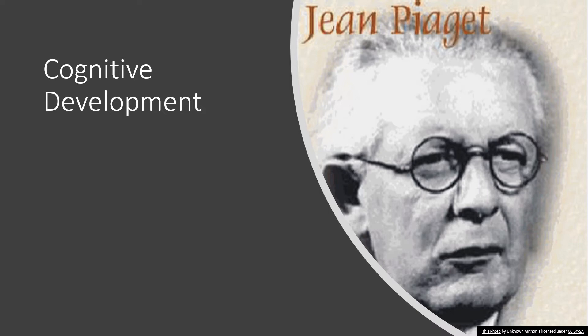Piaget is well known for a stage theory of child cognitive development. One of the concepts he talked about was the schema — a cognitive model, a mental representation of the world, a way to organize knowledge in our brains. He described how children construct an understanding of the world around them and organize this in schemata, and whenever they experience something not aligned with what they already know, they have to either adapt or adjust their existing schema.